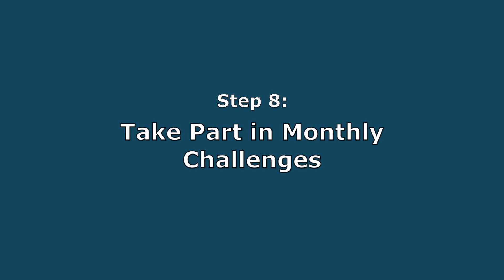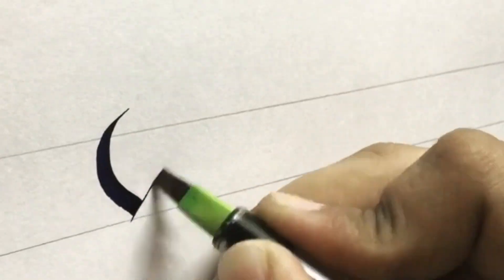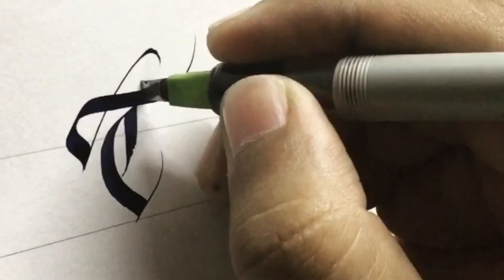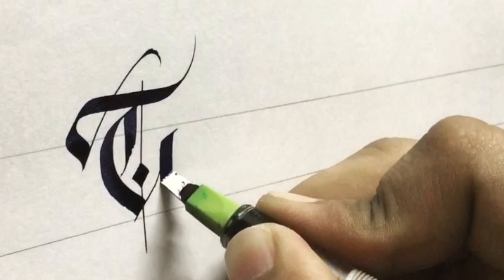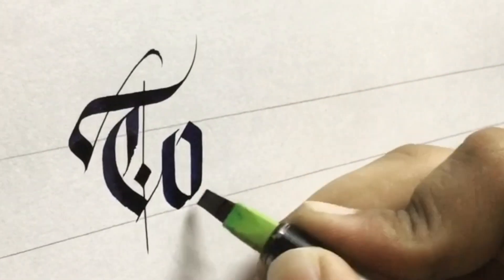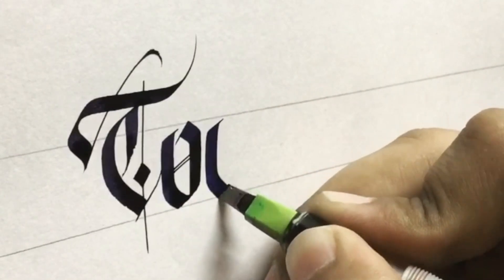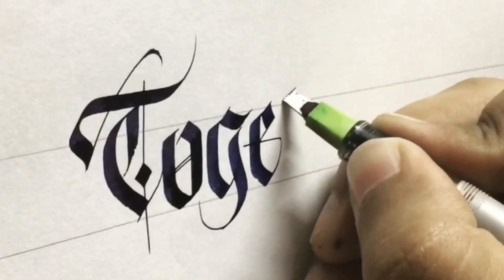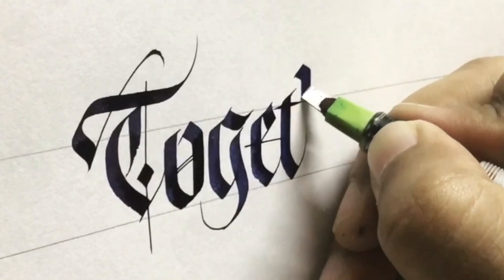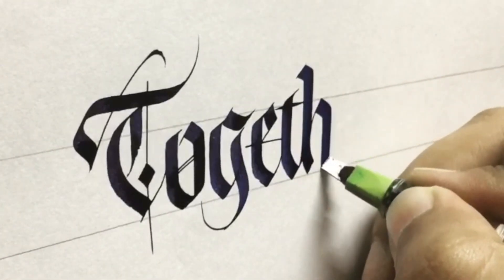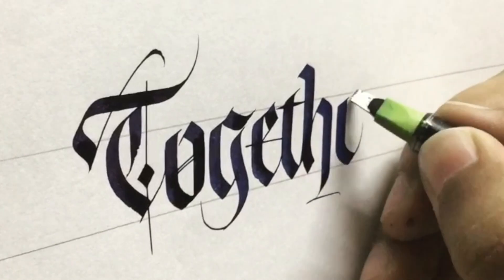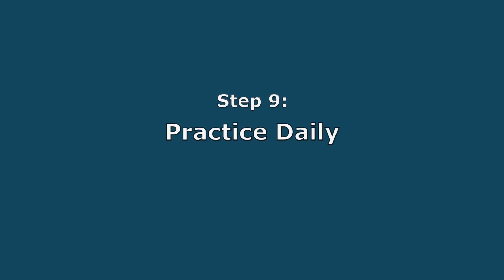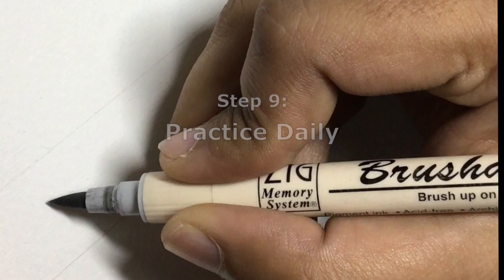Step 8: take part in monthly challenges. This can really help you with step 7 and will help you improve at a faster pace. You will get a lot of ideas to write a single word, phrase, or quote, and after finishing the challenge, it will give you a sense of accomplishment. This has really helped me a lot — I still take part in monthly challenges. Please check the description box where I've mentioned an Instagram channel with all the information regarding monthly challenges.